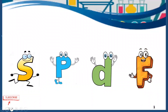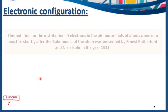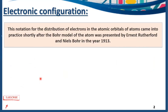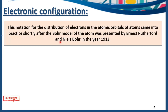Today we are talking about electronic configuration. Who proposed electronic configuration? This notation for the distribution of electrons in atomic orbitals of atoms came into practice shortly after the Bohr model of the atom, which was presented by Niels Bohr in 1930.